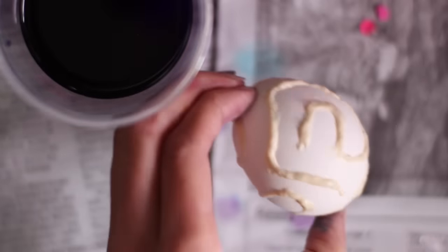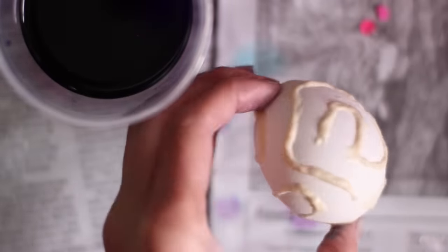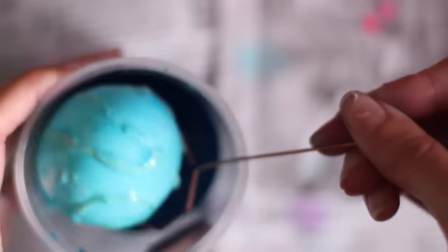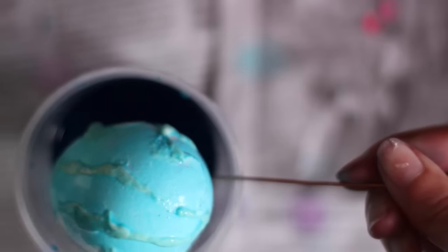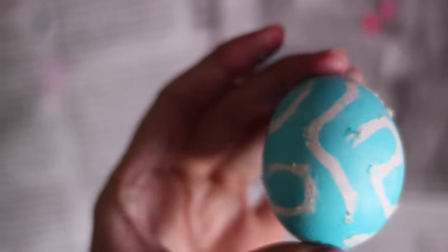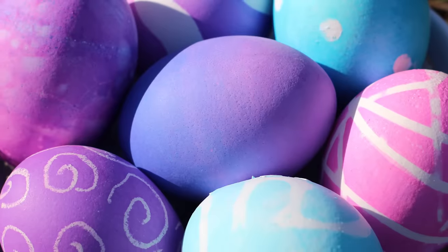And then once it starts to dry a bit, you can go ahead and put it in the dye. I left it there for a little while and then I took it out. The paper towel takes some of the flour off, but you'll need to wash it off before you're completely done. But as you can see, the flour paste resisted the dye and it looked like this. And that's it.